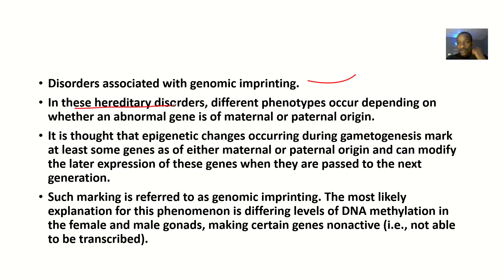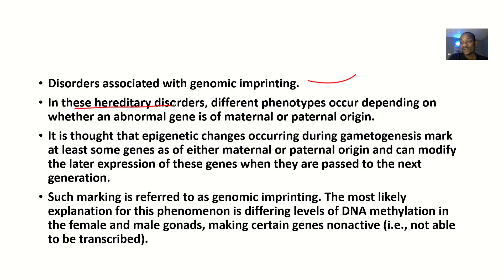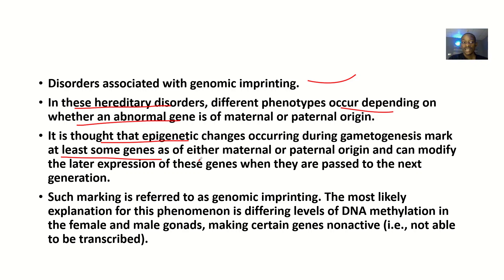So these are hereditary disorders. Examples include Prader-Willi syndrome and Angelman syndrome. In these hereditary disorders, different phenotypes occur depending on whether an abnormal gene is from the mother or from the father. It is also thought that epigenetic changes occurring during gametogenesis mark at least some genes as either maternal or paternal origin, and can modify the later expression of these genes when they are passed to the next generation. Such marking is what we refer to as genomic imprinting.